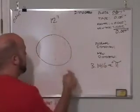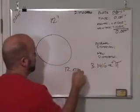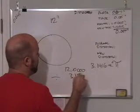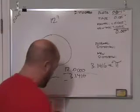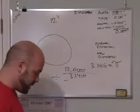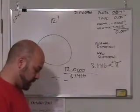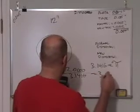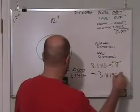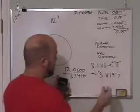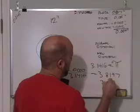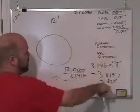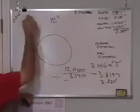So we're going to take 12.0000 divided by 3.1416 and we'll see what we get here. That'll give us the print diameter. 12 divided by 3.1416 equals... So that's 3.8197,